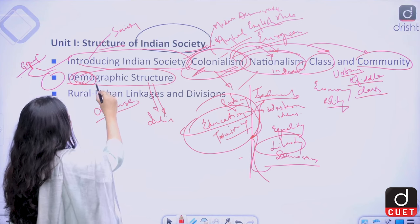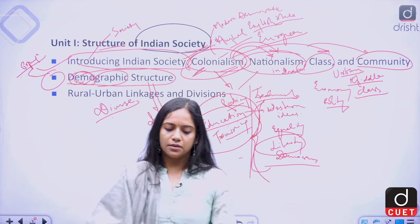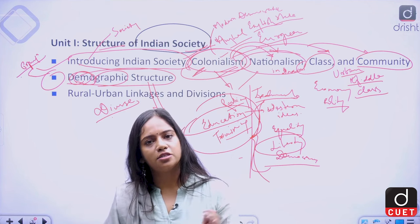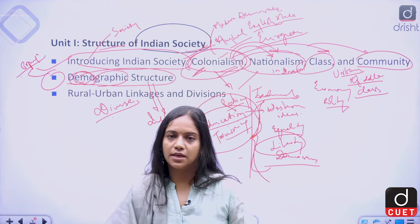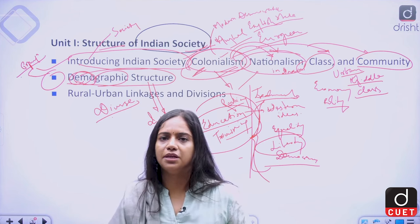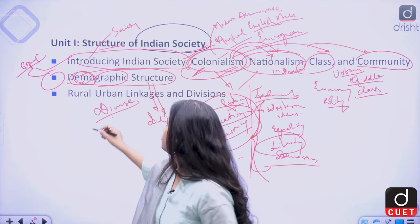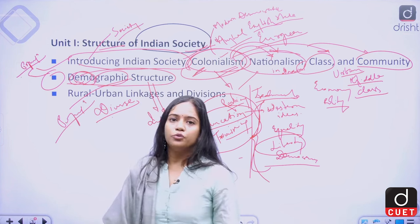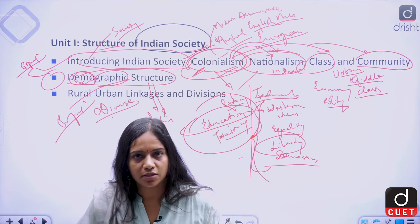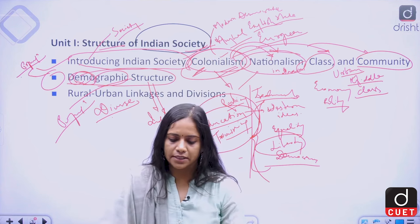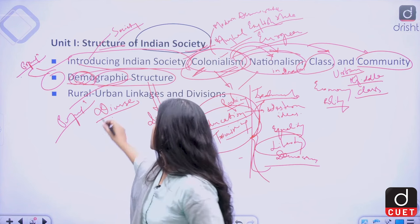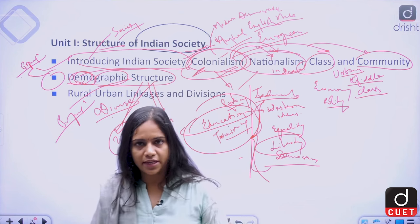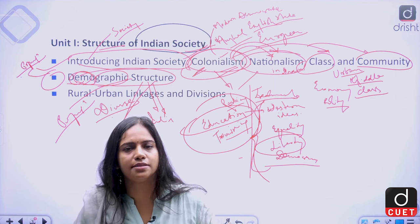We would be studying how people are distributed across regions, how they are distributed as per their age, sex, and religious and ethnic communities, and we would also be discussing various rates that impact the population of India. Most of you would know that India is the second most populous country in the world. We do not have the latest census data yet — the last census data available is from 2011, and since then population has increased. However, we still remain at the second position after China.